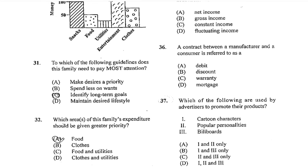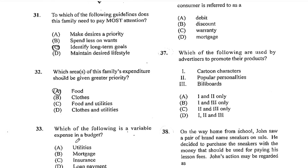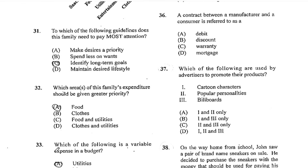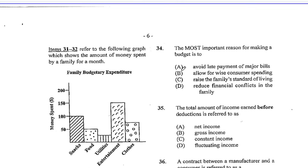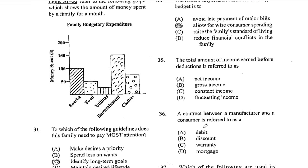Number 33. Which of the following is a variable expense in a budget? Among those given — utilities, mortgage, insurance, and loan payments — A, utilities, would be a variable expense, as all the others are fixed expenses. Number 34. The most important reason for making a budget is to B, allow for wise consumer spending. C and D are also possible answers, but if the family spends wisely, it will automatically raise the family's standard of living and reduce financial conflicts within the family. Number 35. The total amount of income earned before deductions is referred to as B, gross income. Net income would be after the deductions have been taken out.